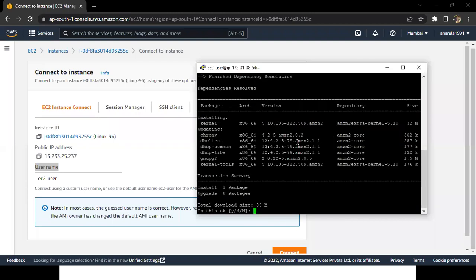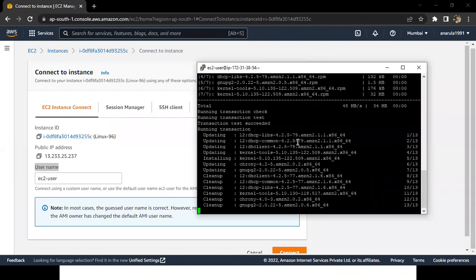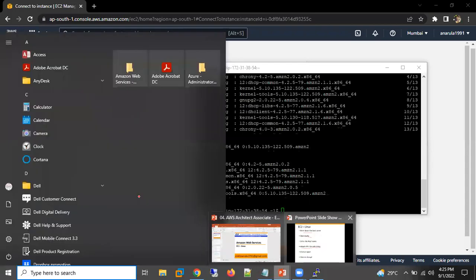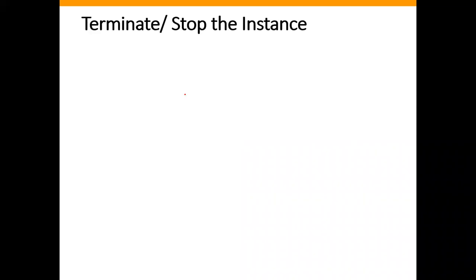Once connected, if you want to check for updates, run the command 'sudo yum update' - this will update any additions in your Linux machine. So we are able to connect to our machine. This is how we can create our Linux machine and connect to it. After our practice, we have to terminate our machine since we don't require it anymore.